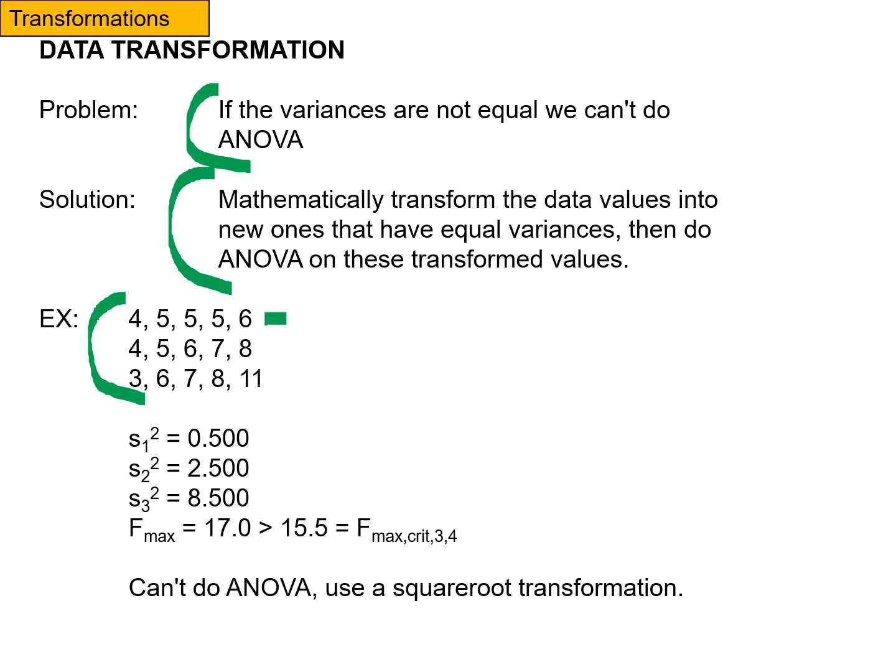If I take these five values, they have this variance. These five values have this variance. These five values have this variance. And to do an Fmax test, I take the largest one and divide it by the smallest one. So 8.5 divided by 0.5 gives me 17.